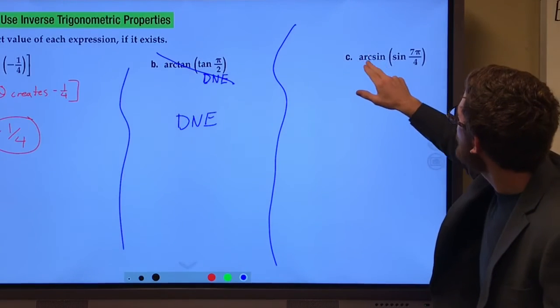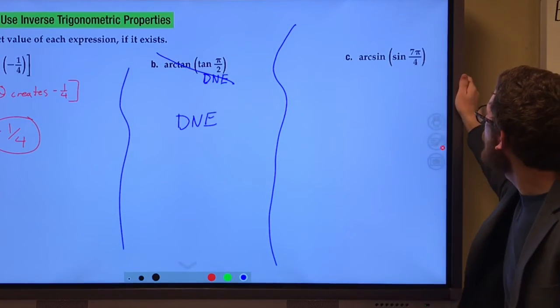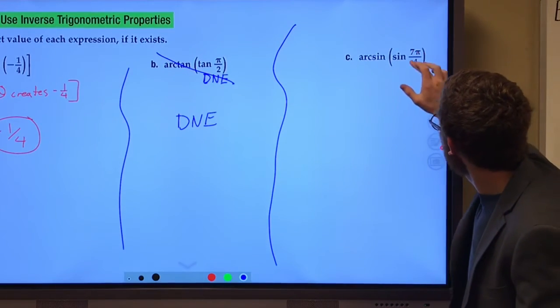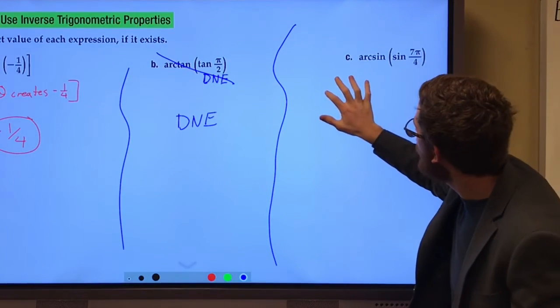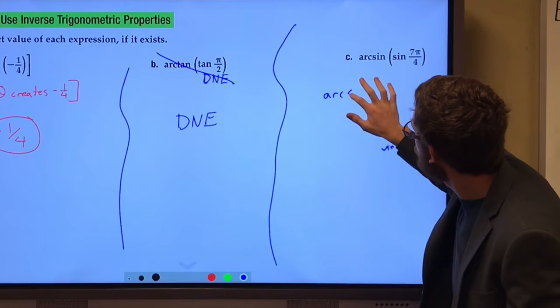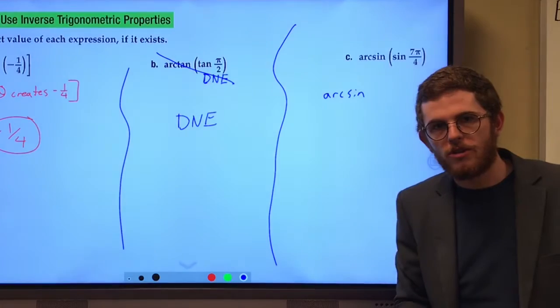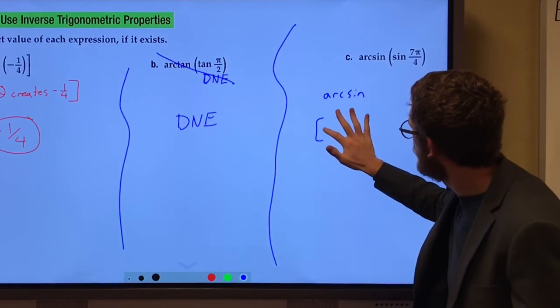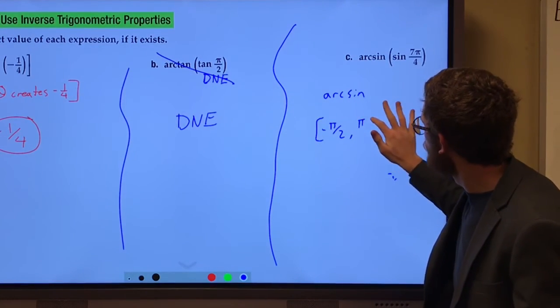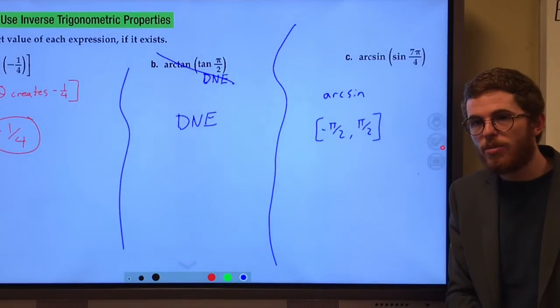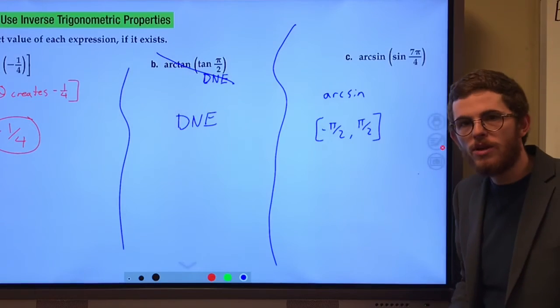But what angle gives us the sine of seven pi over four? Well, whenever we find arc sine, we know we have that restricted domain between negative pi over two and pi over two. Seven pi over four is not between those.